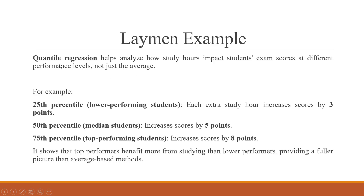A learning example: quantile regression helps analyze how study hours impact students' exam scores at different performance levels, not just the average. For the 25th percentile, lower performing students, each extra study hour increases scores by 3 points. For the 50th percentile median students, scores increase by 5 points. For the 75th percentile, top performing students, each extra study hour increases scores by 8 points. This shows that top performers benefit more from studying than lower performers, providing a fuller picture than average-based methods.